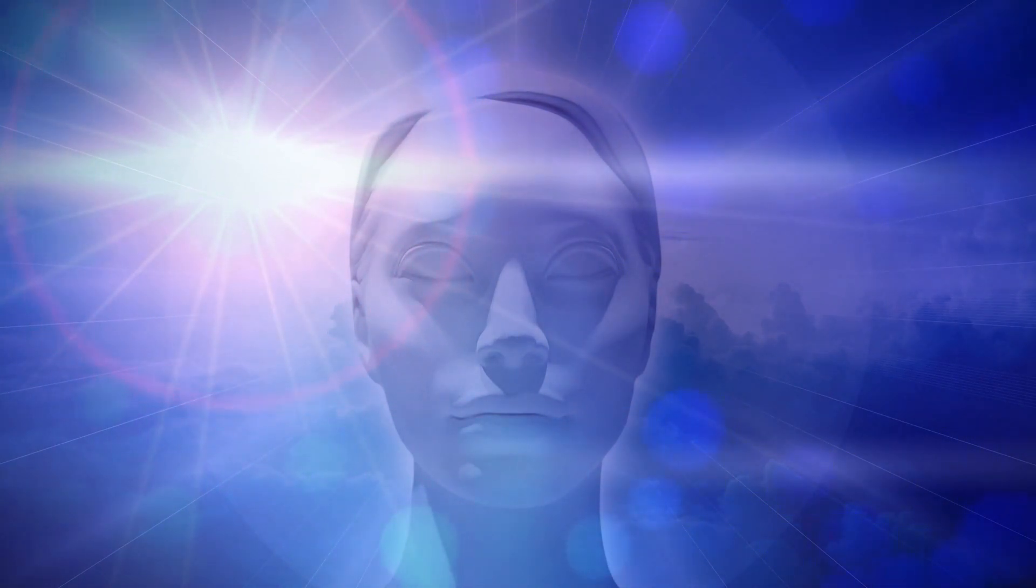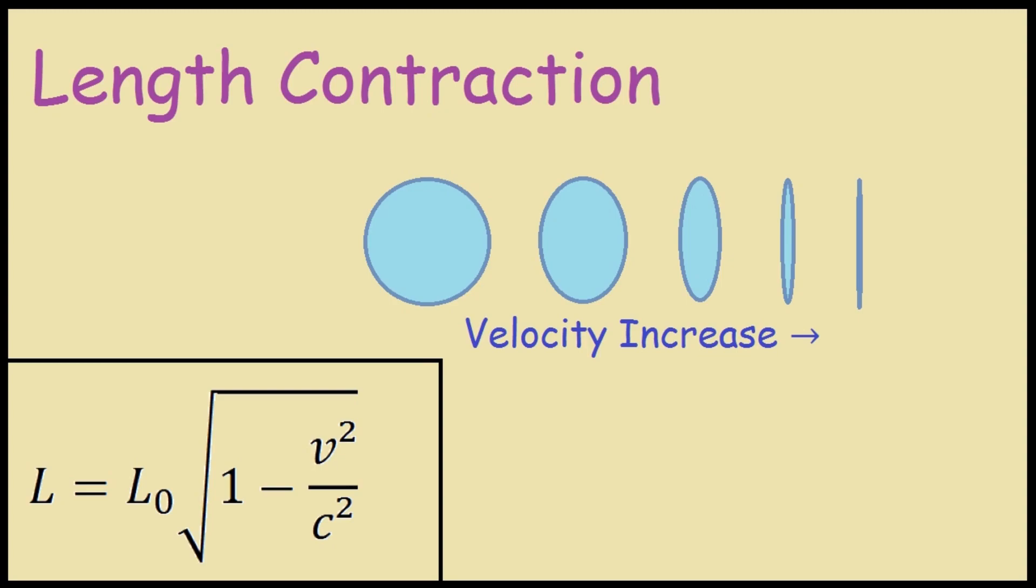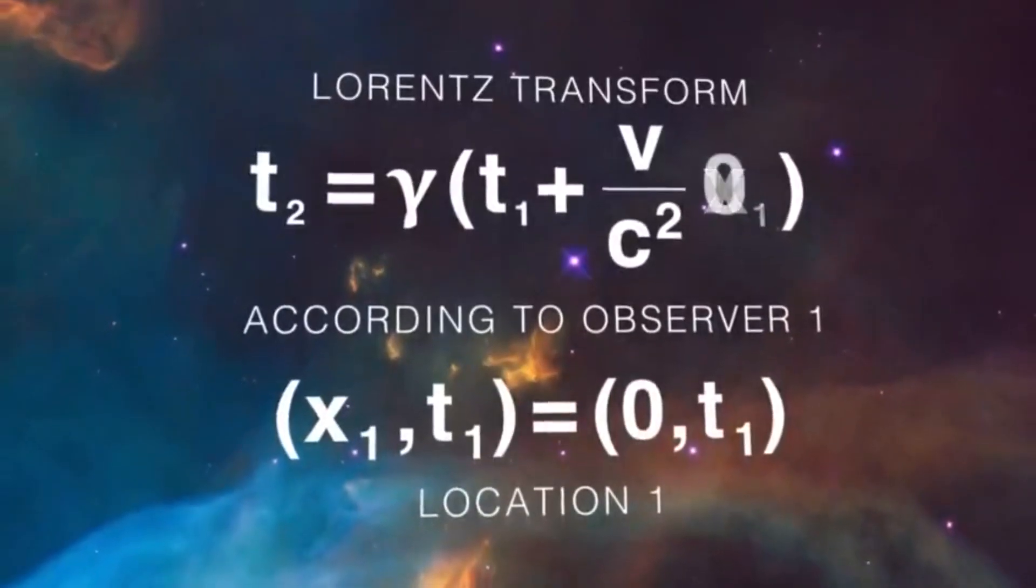As a photon, relativity significantly affects your length. According to the theory, as an object approaches the speed of light, its length contracts, a phenomenon known as length contraction. Since you are already moving at the speed of light, this contraction has a substantial impact on your length.